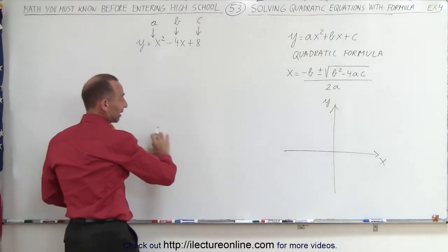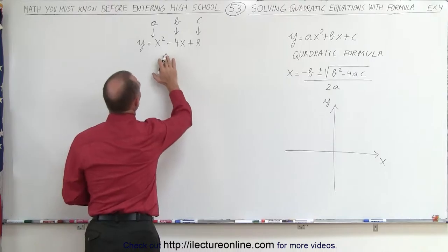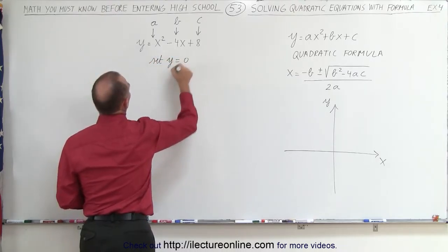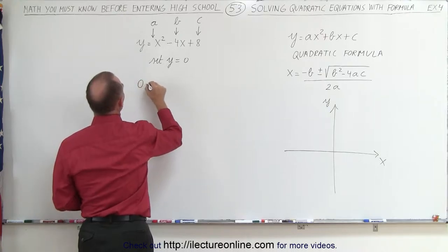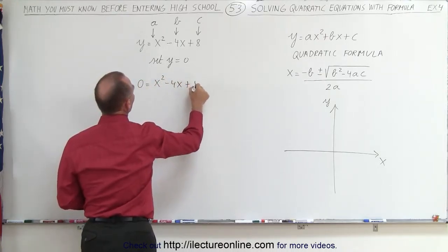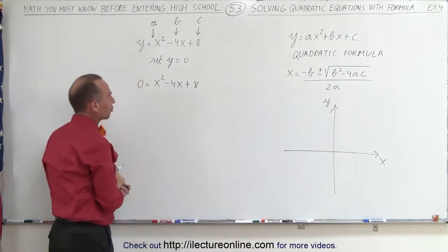So in order to find the places where it crosses the x-axis, we're going to set y equal to 0. Set y equal to 0, and now we get 0 is equal to x squared minus 4x plus 8. And now we're going to try to factor that.